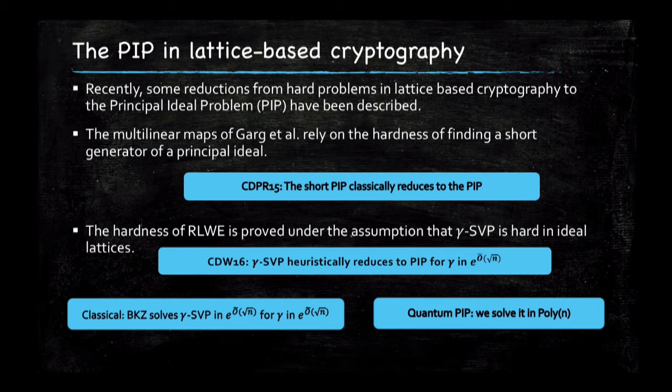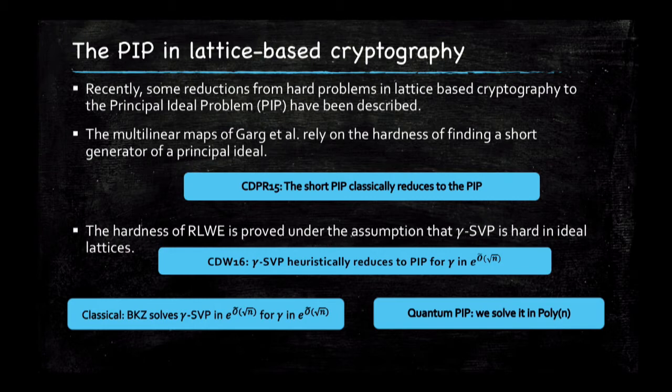Just a word about the security implications with respect to ring-LWE: I'm not saying anything is broken. The proof of security of ring-LWE under the assumption that gamma-SVP is hard is only for very small gamma, so the kind of gamma we have here does not threaten that proof of security. And even if you found an algorithm that solves SVP, it does not necessarily mean it will find solutions to the ring-LWE problem. It's just a security reduction, so I'm not claiming we broke anything.